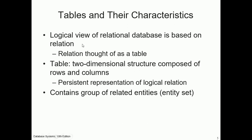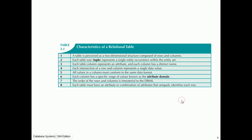Tables and their characteristics: they are the logical view of a relational database and are called relations. A relation is thought of as a table — a two-dimensional structure composed of rows and columns, also called tuples and attributes — and is a persistent, consistent representation of a logical relation. A table contains a group of related entities, also called an entity set.